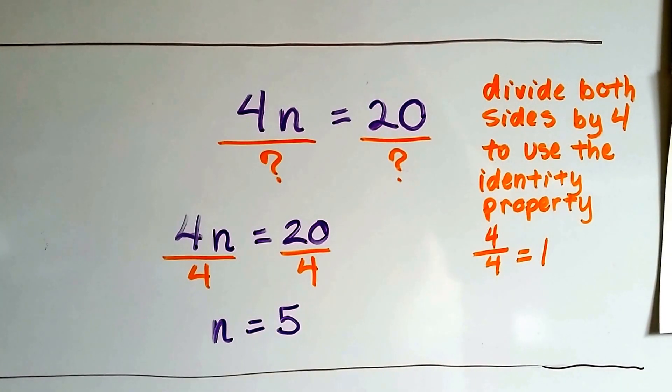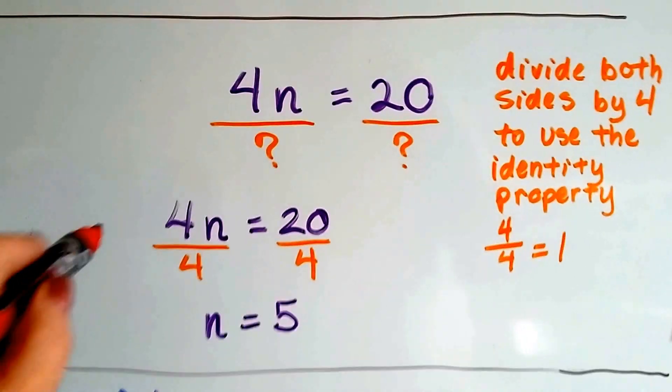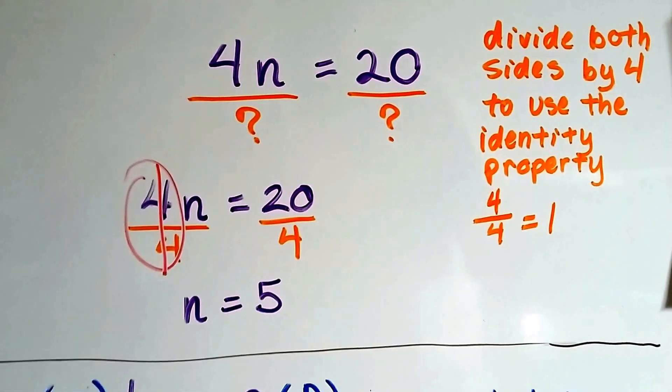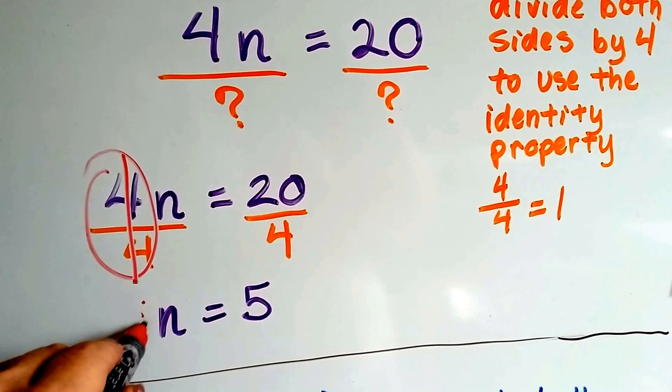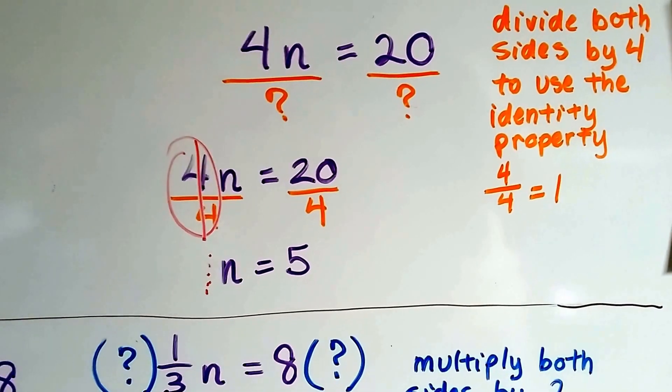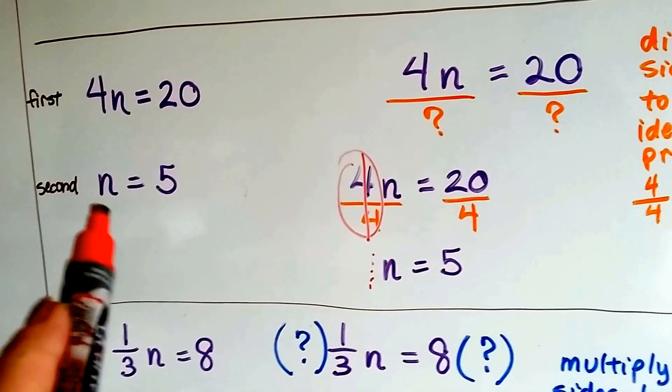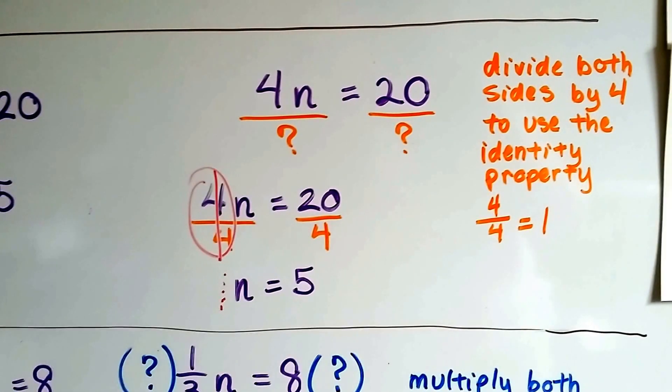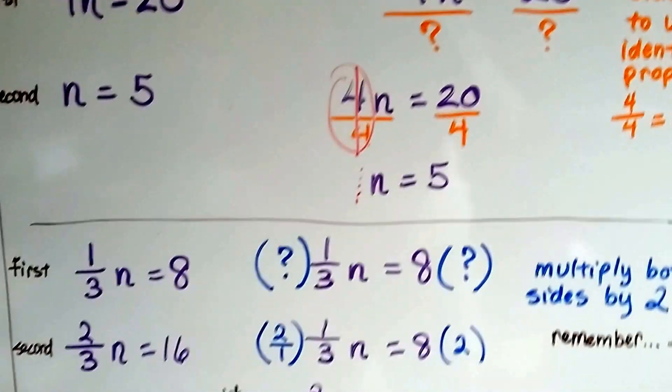We'll end up using the identity property and we'll get 4 over 4. And when we have 4 over 4, that makes a 1. This turns into a 1, that's identity property. Now we have 1n, there's our friendly invisible 1. And 20 divided by 4 is 5. That got us to the n equals 5. We got 1n that's equal to 5. If you're confused about identity property, there'll be a link in this description.